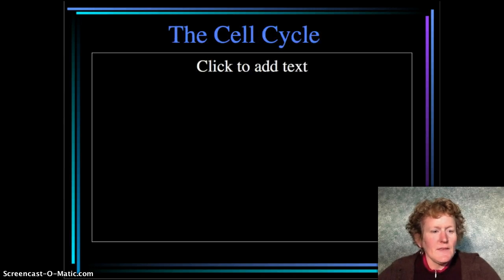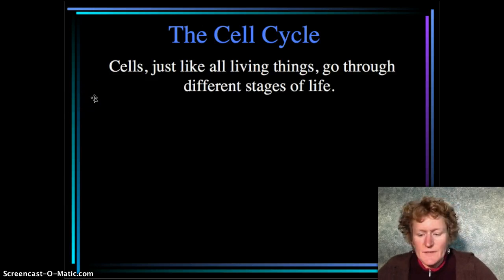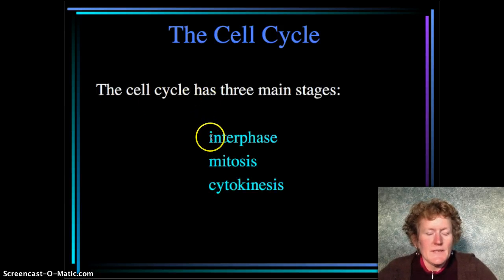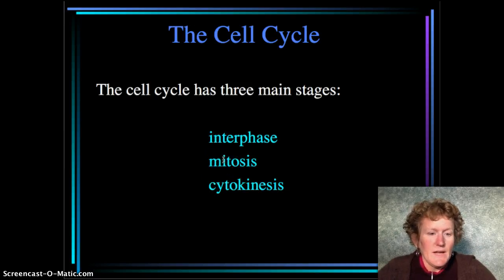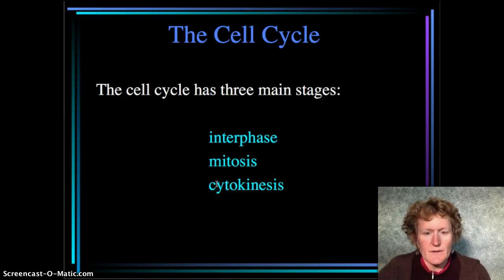Mitosis is part of a larger cell cycle. Cells, just like all living things, go through different stages in life. The cell cycle has three main stages: interphase, which the cell spends most of its time in; mitosis, which is only a very small part of the cell cycle; and then cytokinesis, where the cell splits into two other cells.